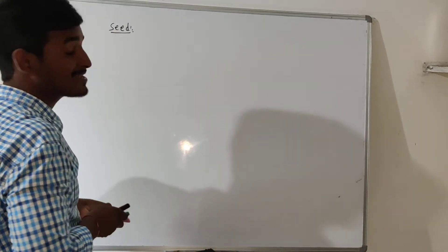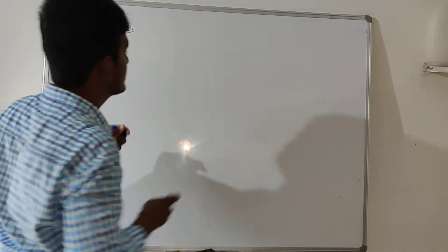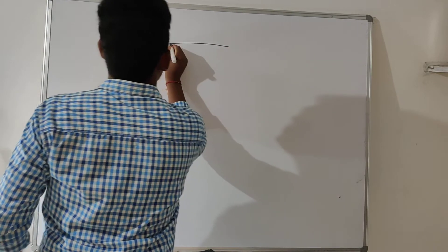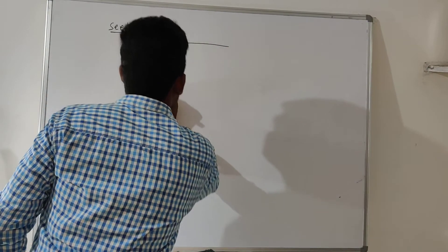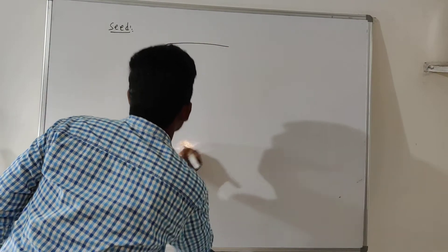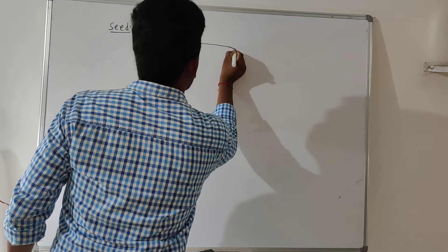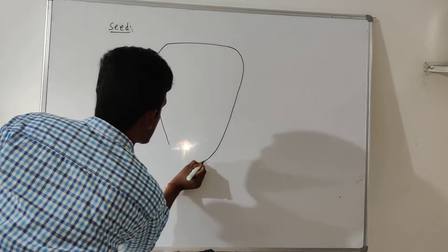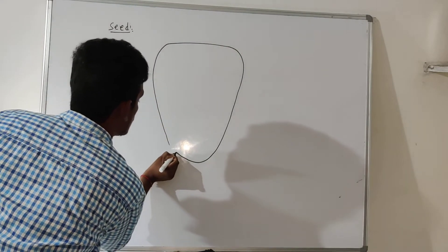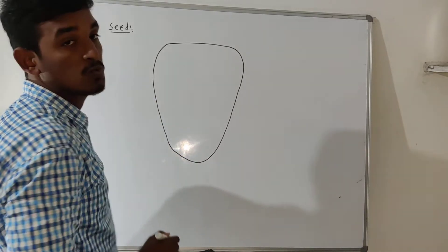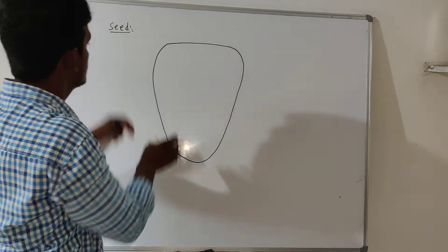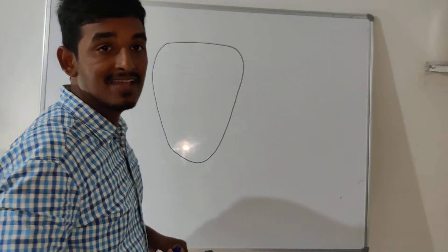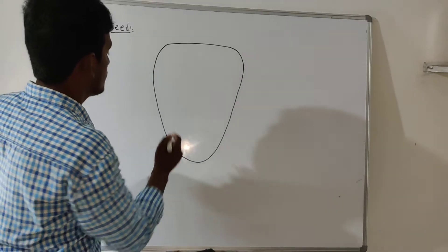A monocotyledon seed has a single cotyledon. In a monocotyledon seed, the single cotyledon is called the scutellum.